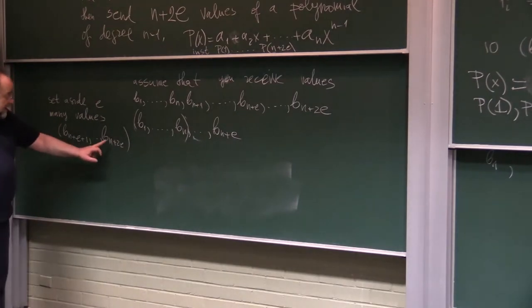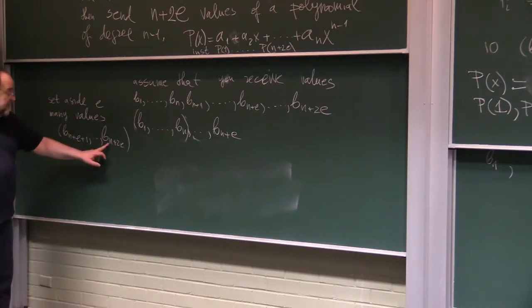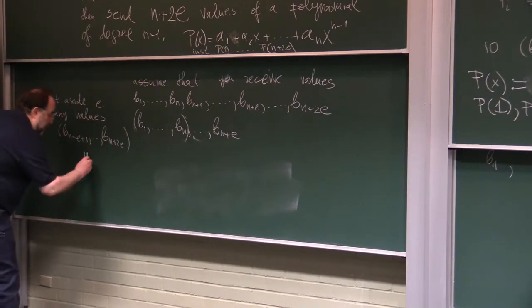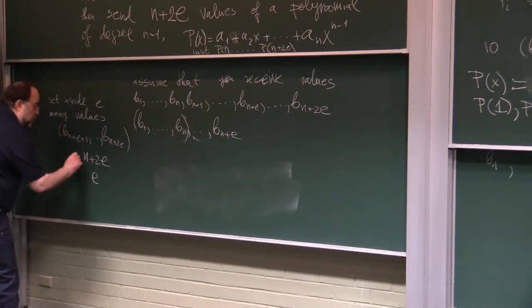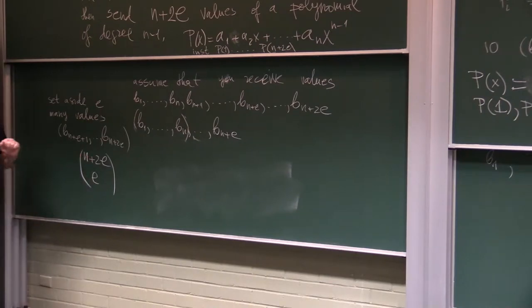Now, if I isolate, I would have to search - notice, this is extremely inefficient algorithm. I would have to search through all subsets, so I have altogether n plus 2e values, and I have to choose any subset of size e, so that will be a gigantic number of cases to check. So this is not a feasible algorithm, but we will make it feasible.